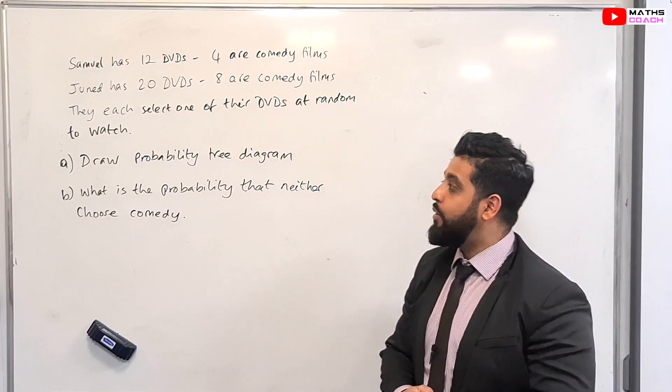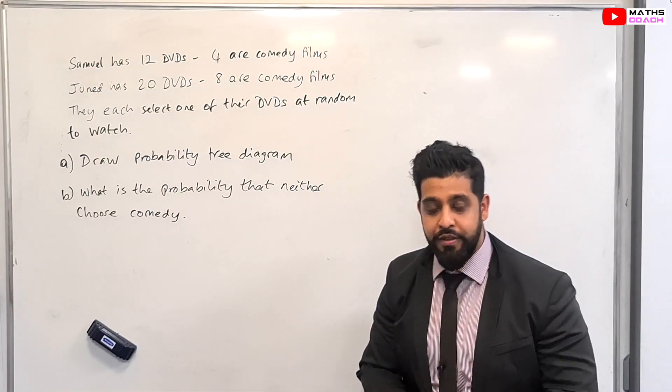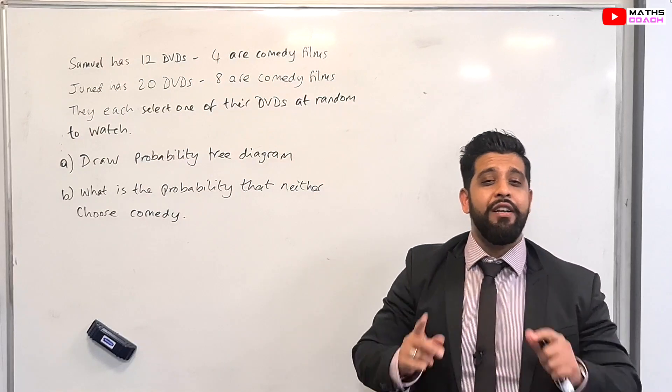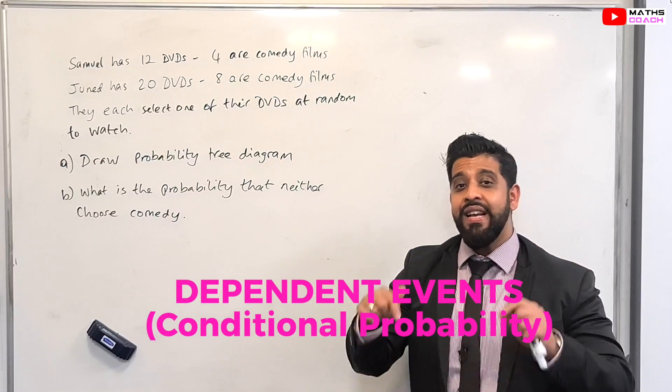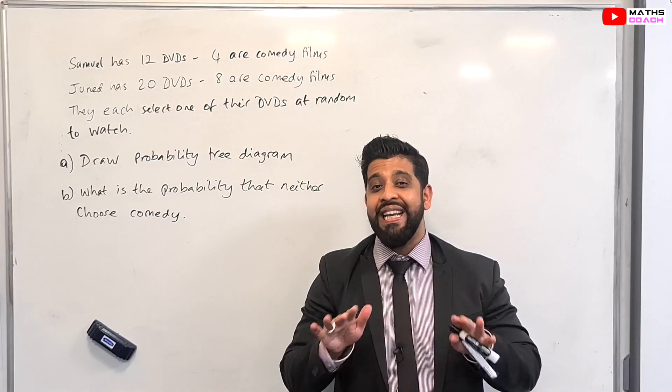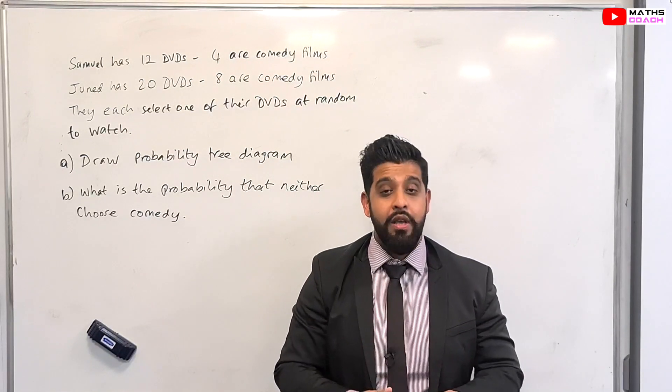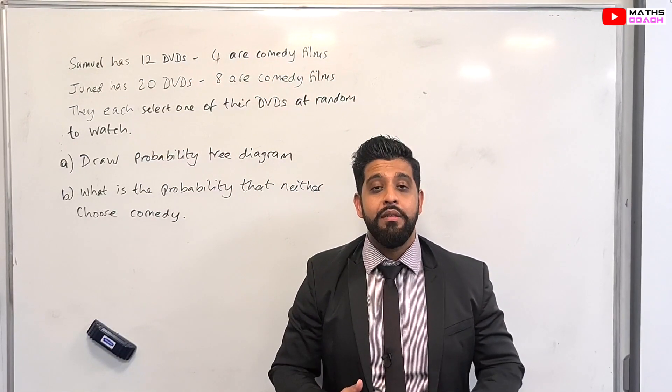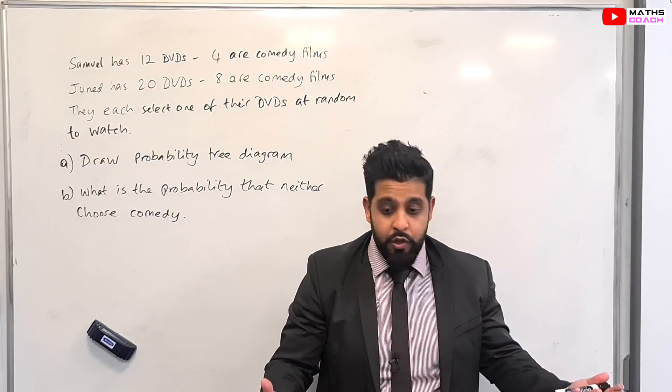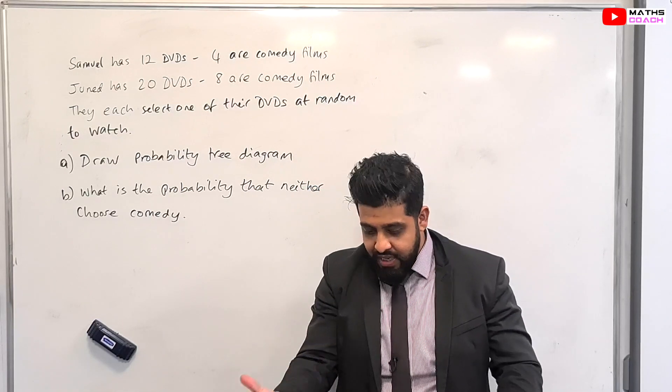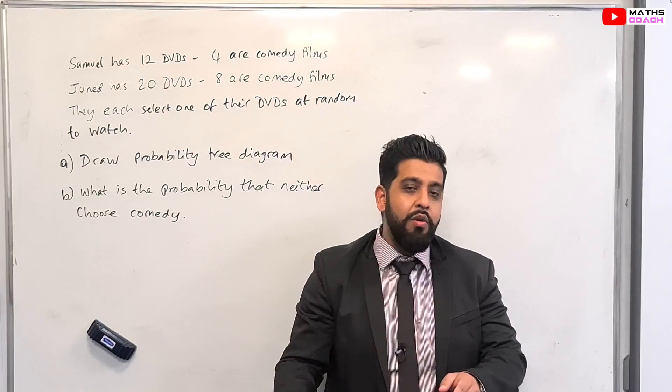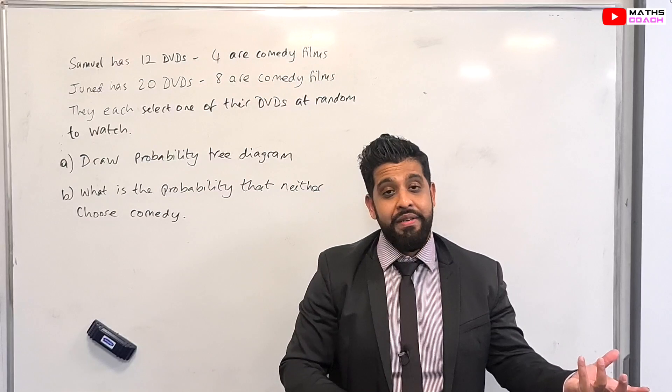Right so let's have a look at our first probability question. Now before we begin I do need to explain to you independent and dependent events. In this lesson we are going to be looking at independent probability tree diagrams. Independent events simply means that one event doesn't affect the other. So for example if the probability of event A happening is this then it has no impact, no effect on the probability of event B happening.